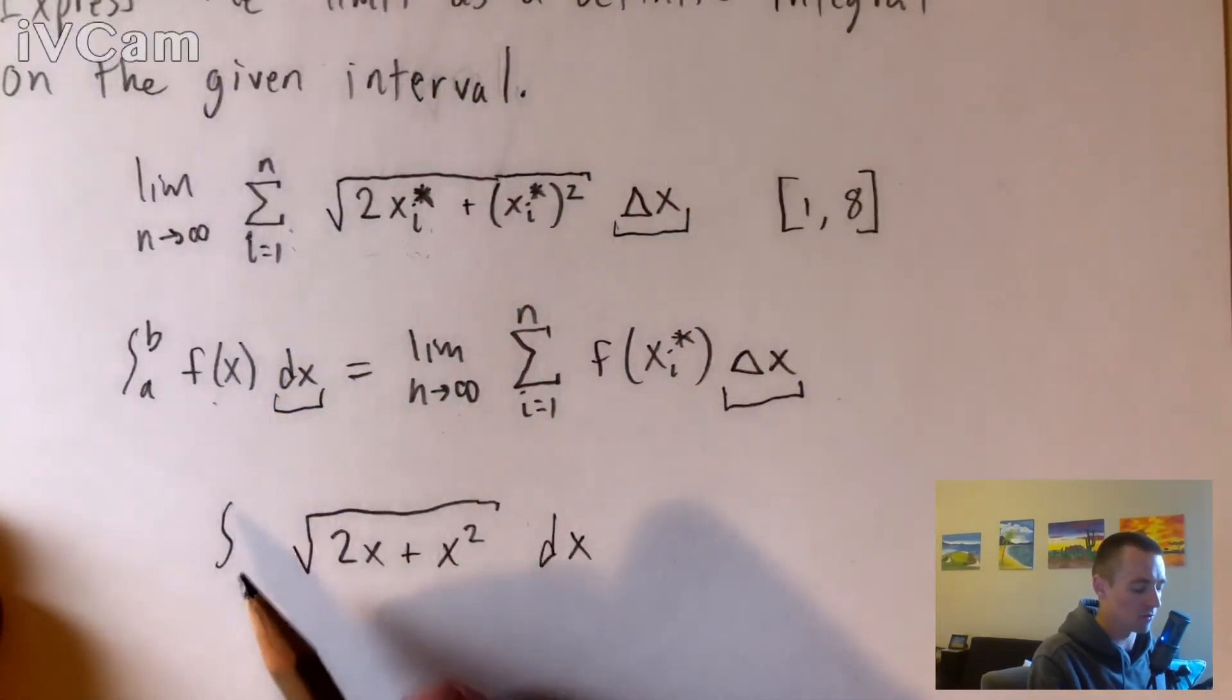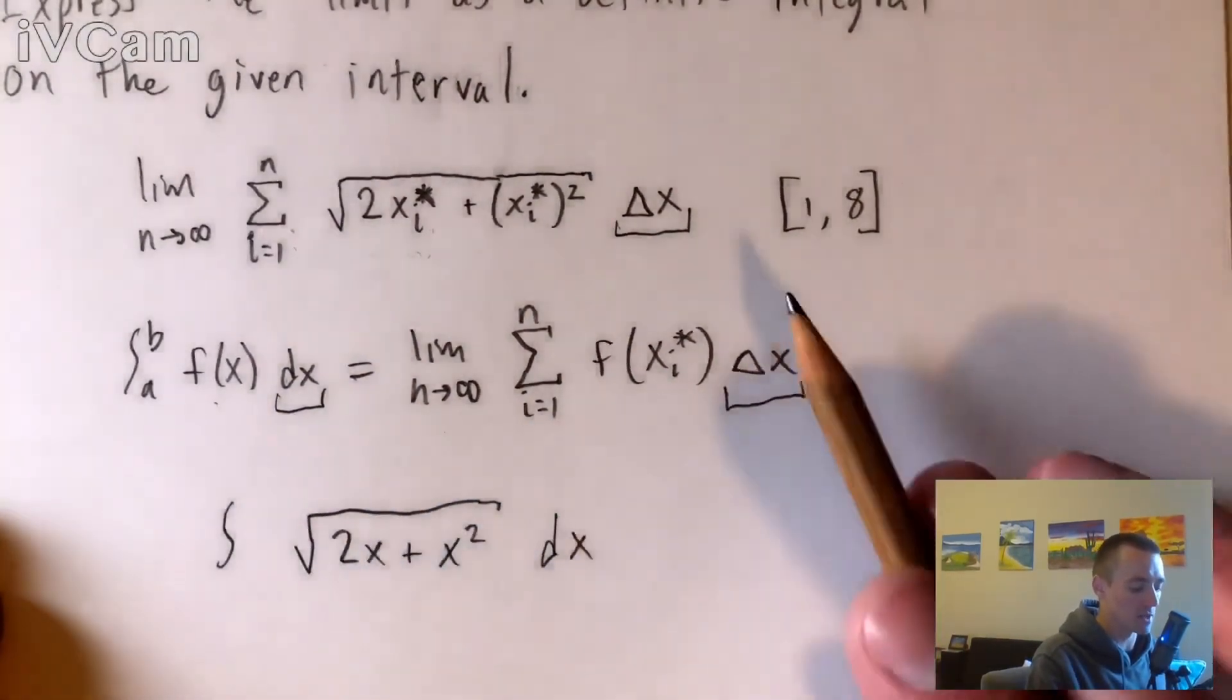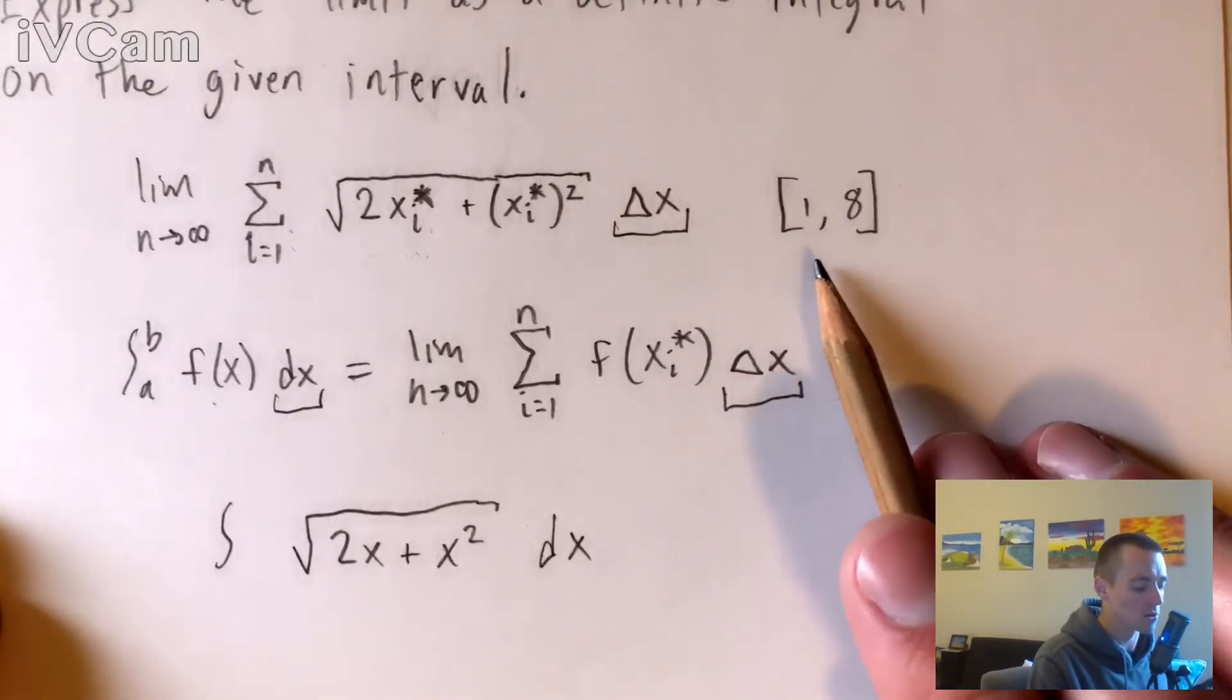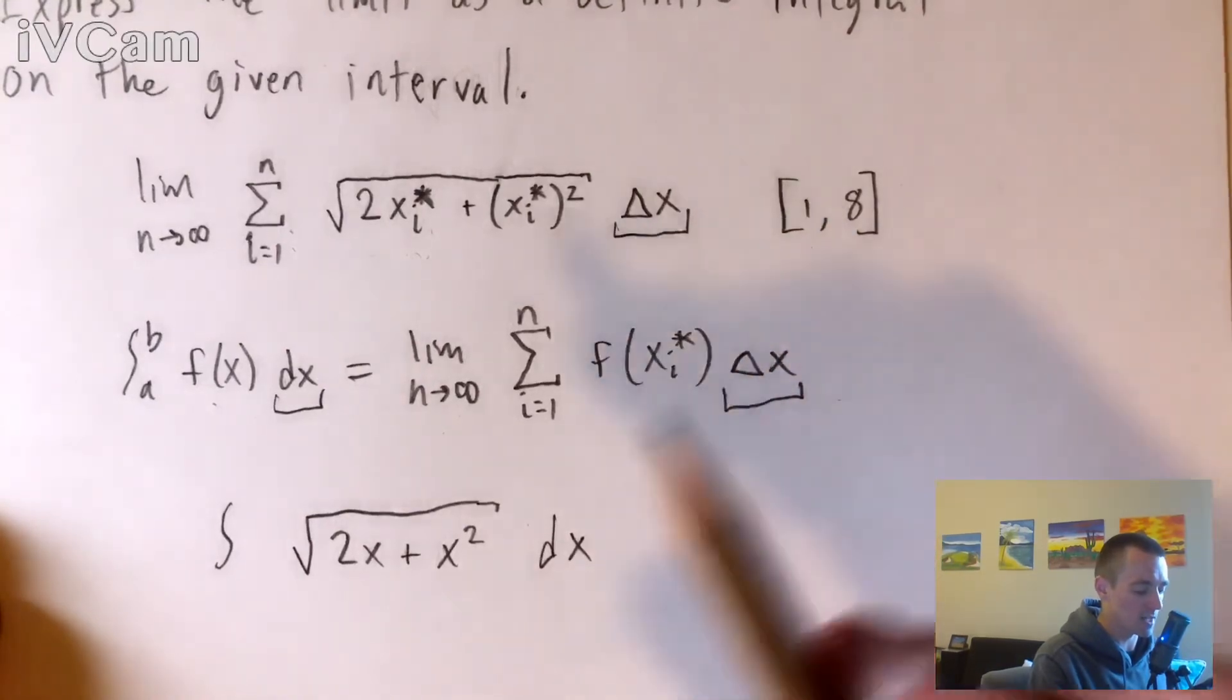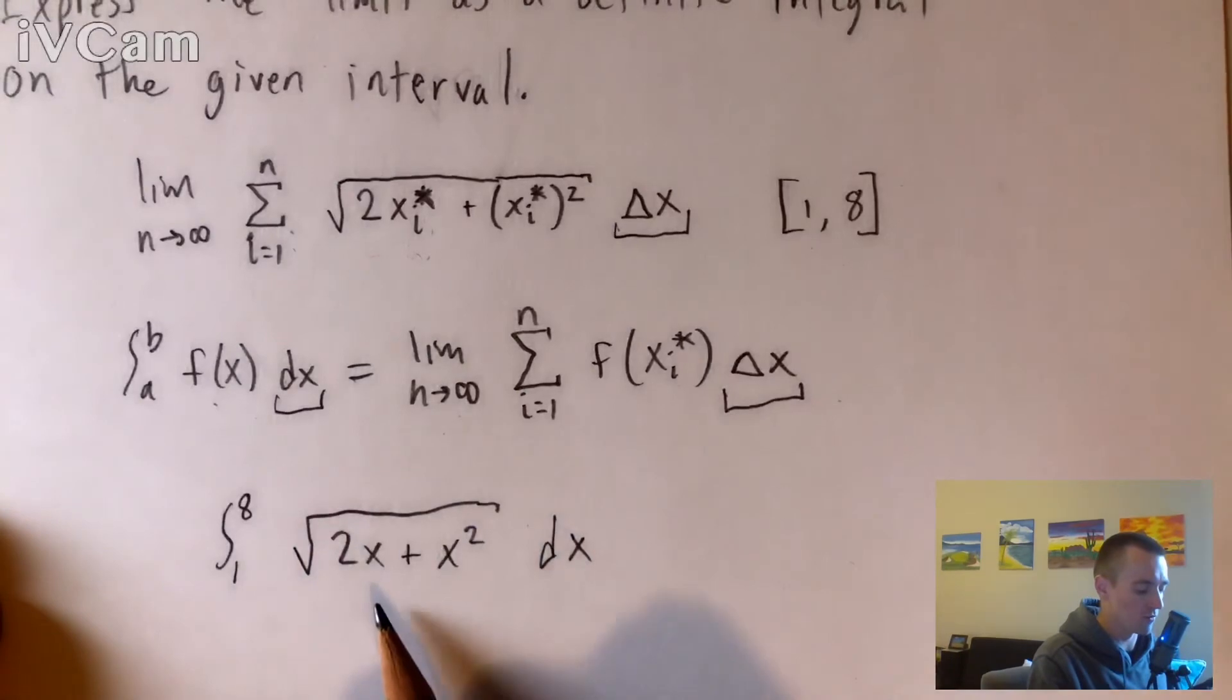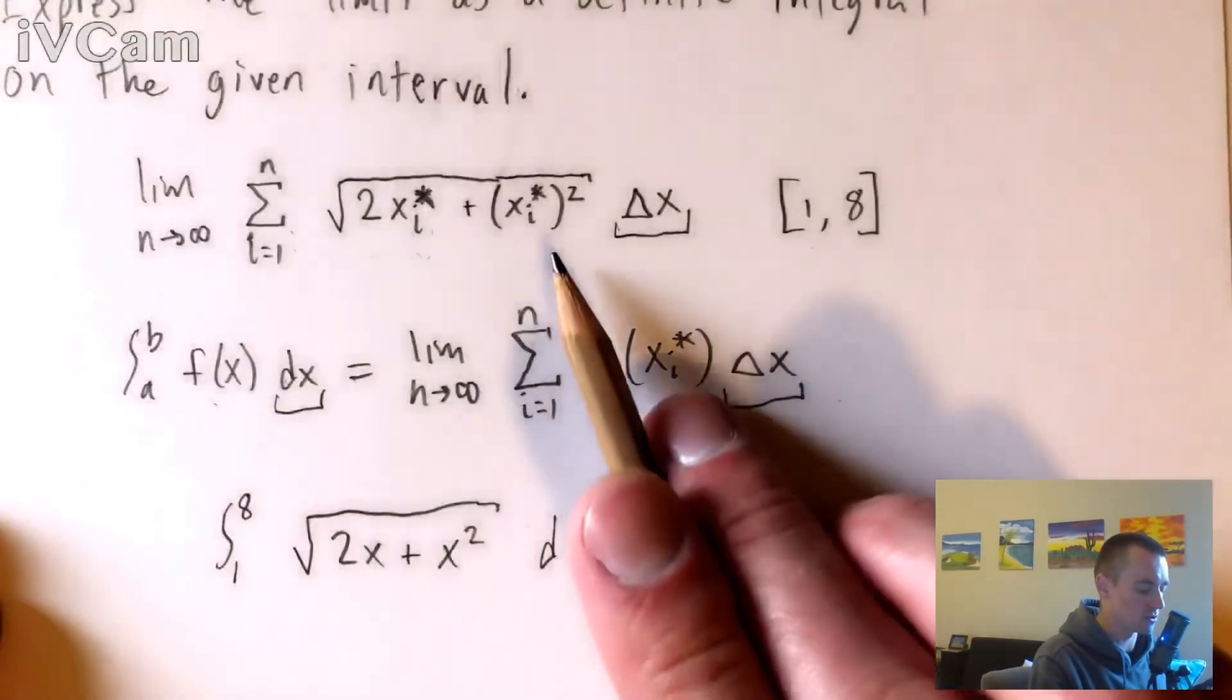And our bounds of our integral are essentially just going to be given from the interval that they gave us in the initial problem. So our interval is from x equals 1 to 8. So that means we're going to integrate from 1 to 8 of this new function f of x, which we just took from here.